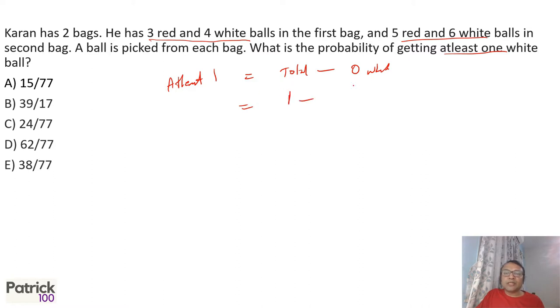So what are the total ways of getting the white ball? One. Zero white ball means first ball is red and second ball is red. First ball is red is 3 out of 7, second ball is red is 5 out of 11. It will become 1 minus 15 upon 77, which will give you 62 out of 77.